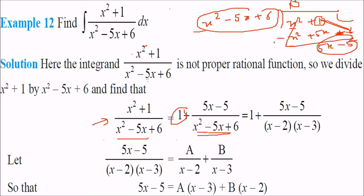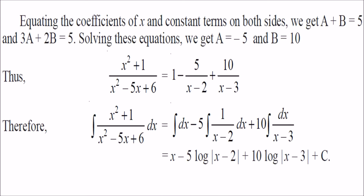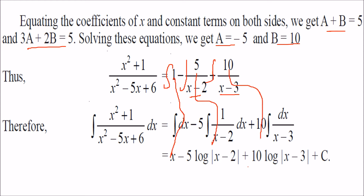We factor x²−5x+6 as (x−2)(x−3). The proper part (5x−5)/[(x−2)(x−3)] is decomposed using partial fractions: A/(x−2) + B/(x−3). Equating like terms gives A+B = 5 and 3A+2B = 5, so A = −5 and B = 10. The integral becomes x − 5·log|x−2| + 10·log|x−3| plus a constant.